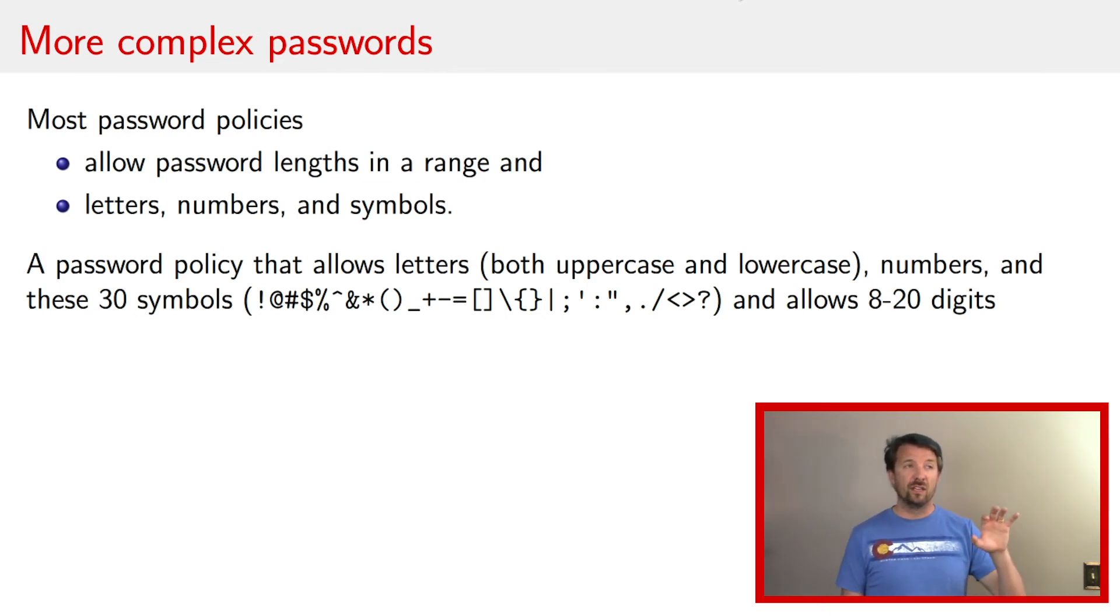And once we find each of those individual number of passwords, we can just add them up. All right, so if we do that, if we say, okay, how many passwords of length 8 are there? Well, there's 92 to the 8th. Well, that 92 comes because there are 52 letters in the English language, that is, if we just make a distinction between lowercase and uppercase, there are 10 numbers, and there are 30 symbols, that's a total of 92. The password length is 8, so it's 92 raised to the 8th power. And we say, how many of length 9? Well, that's 92 to the 9th power. And if we just continue on, then we have 92 to the 19th for a 19 length password. And we have 92 to the 20 for a 20 digit password.